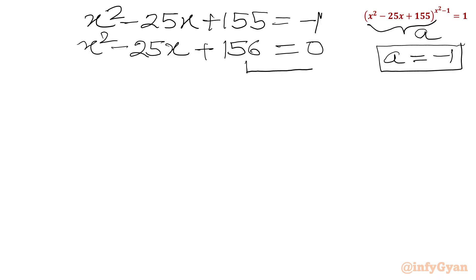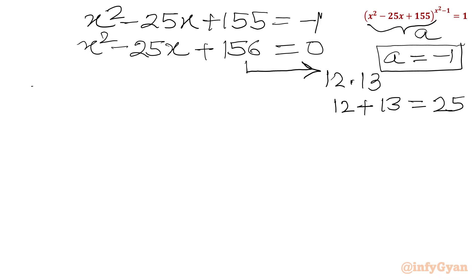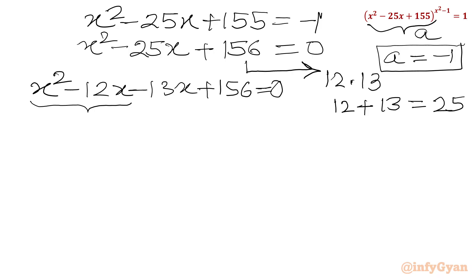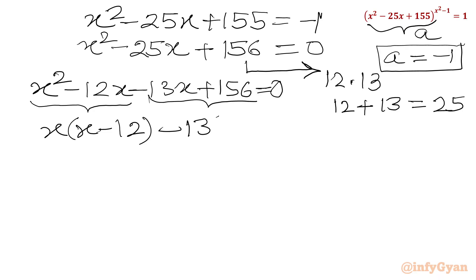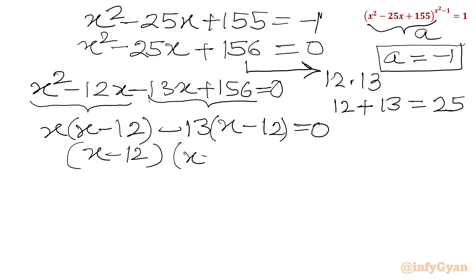We can solve this quadratic equation again with the factorization method. The factors of 156 are 12 times 13, and 12 plus 13 equals 25, our middle term coefficient. So we split the middle term as minus 12x minus 13x plus 156 equal to 0. Taking x common gives x(x minus 12), and taking minus 13 common gives minus 13(x minus 12). So we get (x minus 12)(x minus 13) equal to 0, giving x equal to 12 and x equal to 13.